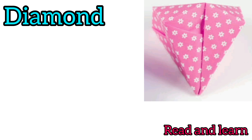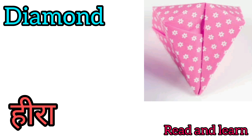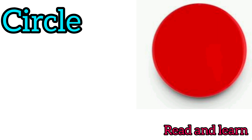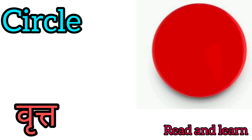Diamond — diamond means Heera. Circle — circle means Vrit.